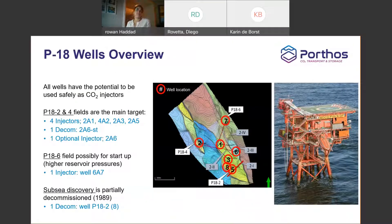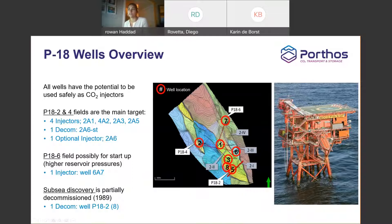For the wells overview: the main storage capacity providers will be P18-2 and P18-4, with three injectors in P18-2 and one injector in P18-4. Some wells will be decommissioned, such as the P18-2 and P18-6 mother bore and sidetrack. P18-6 will be used as potentially a reserve capacity or for startup — it has a slightly higher pressure there.